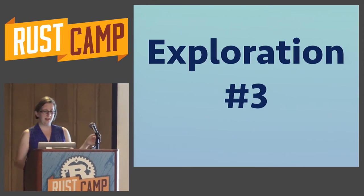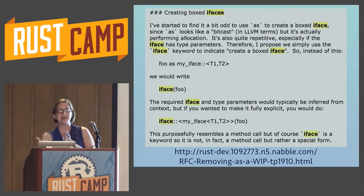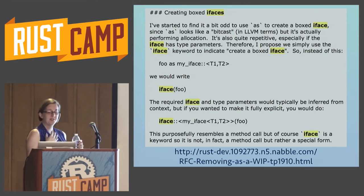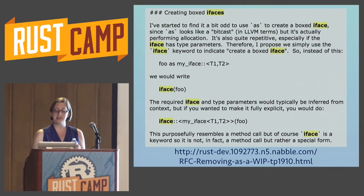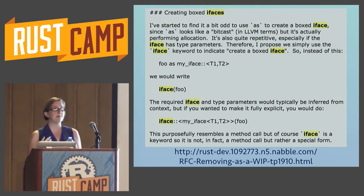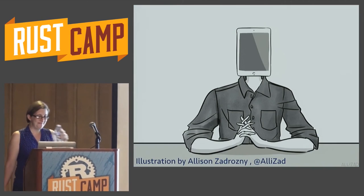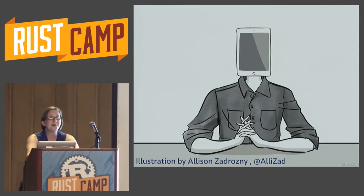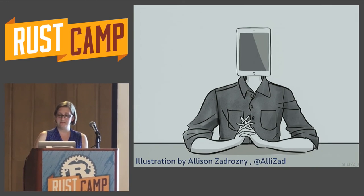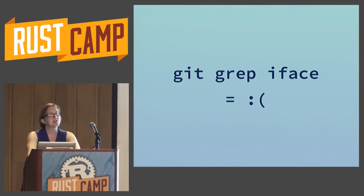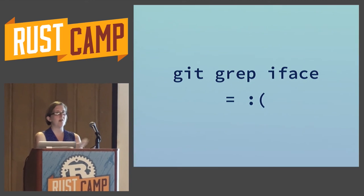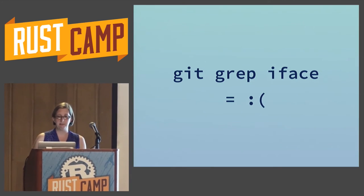Exploration number three. When I was reading through the mailing list, I found some messages that talked about 'iface' — a keyword that doesn't exist anymore. From context, I could tell it was a shortened form of 'interface,' though it makes me laugh because it sounds like the next Apple product you don't really need. So what was iface, where did it go, and has it been replaced with something else? We can't use the tricks from before because iface is gone. Git grep does return a couple of results, but only things like a compile-fail test to make sure it's no longer a recognized keyword.